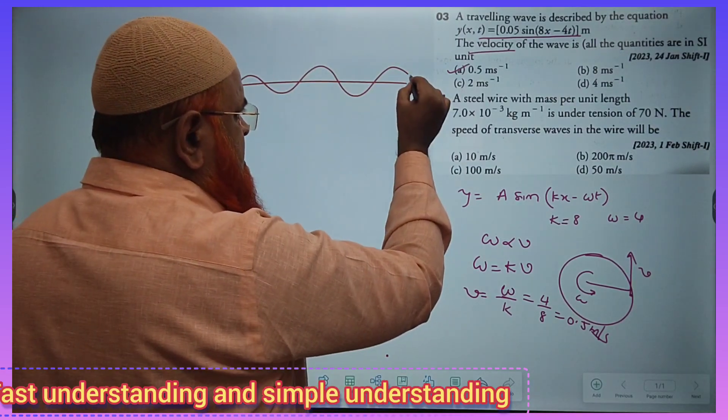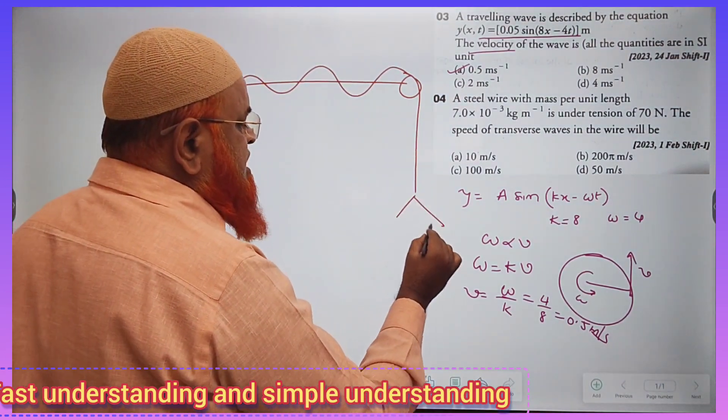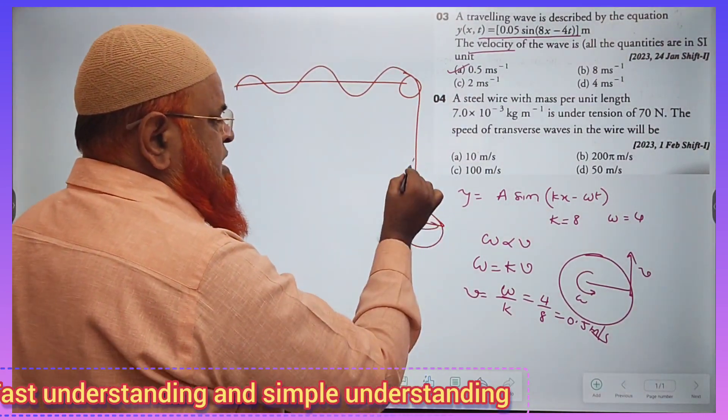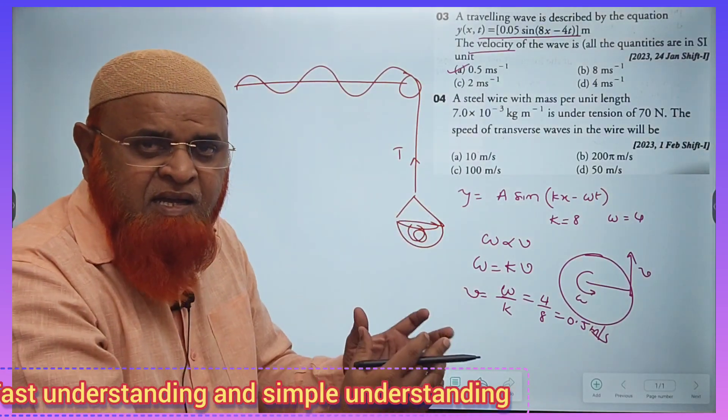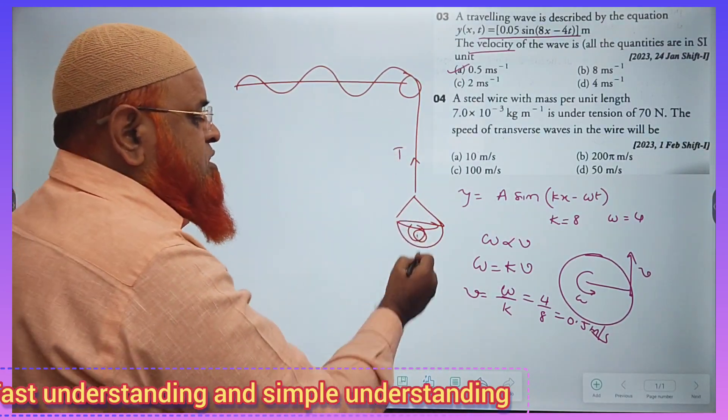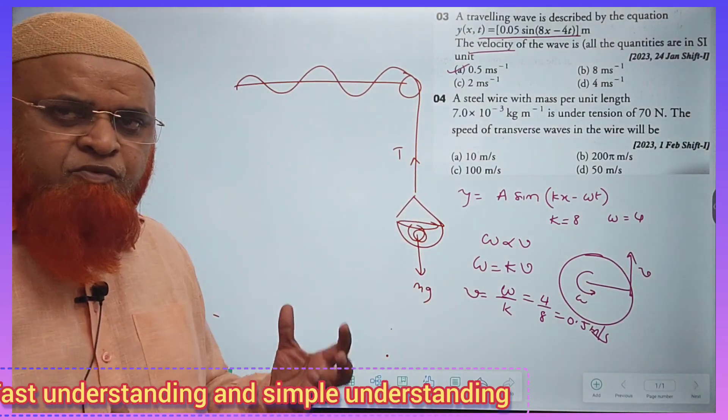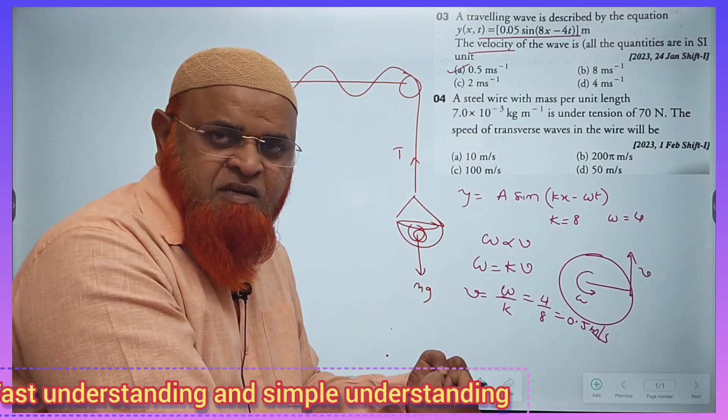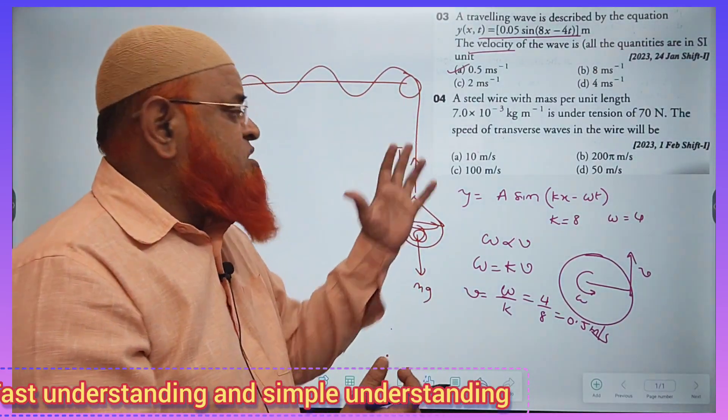For example, here if there is a pulley and you are hanging over the pulley with certain weight. This is the tension. The greater the weights you add, the larger will be the tension because Mg is acting downwards and tension is acting upwards. The greater the tension, the greater the weight. You add more weights, tension will increase.